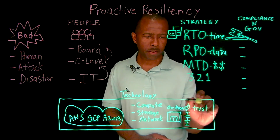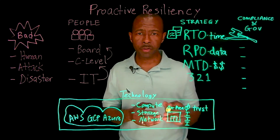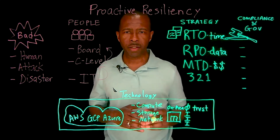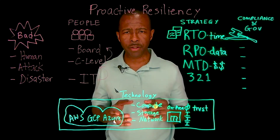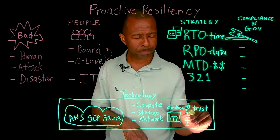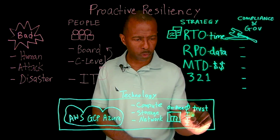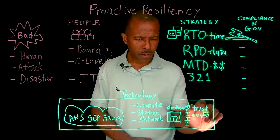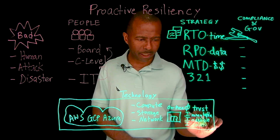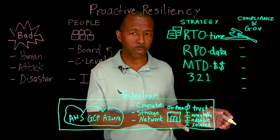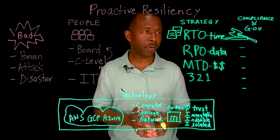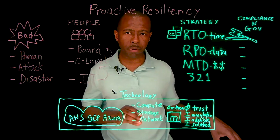Zero-trust principles are critical to implementing things such as multi-factor authentication, role-based access control, and encryption — whether data is in transit or at rest. Also make sure that the storage or target where you're sending that data is immutable, indelible, and isolated. You should have an isolated recovery environment where you can recover data from a ransomware attack in pristine format.